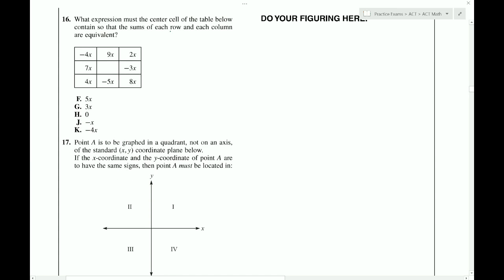What expression must the center cell of the table below contain so that the sums of each row and each column are equivalent? Well, I could take the sum of this row and figure out what it is. So, 9 minus 4 is 5. Then, 5 plus 2 is 7x. So, now, I need the next row to also equal 7x. So, 7x minus 3x is 4x. So, I would need to add three more x's in order to get 7x from this row. So, so far, I'm leaning towards 3x in the missing space there. And just to make sure, let's do a vertical to see what we get here. So, 9 minus 5 is 4. 4 plus 3 is 7. So, seems to check out.